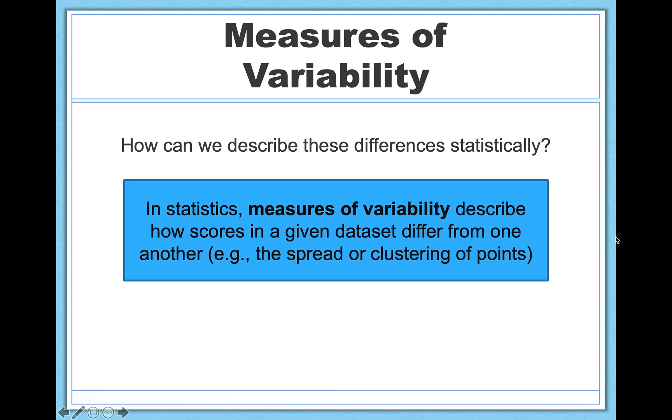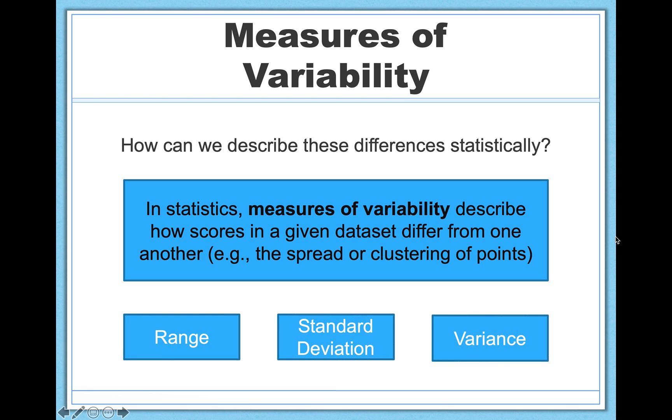So in general, in statistics, measures of variability are ways to describe these differences statistically. They describe how scores in a given data set differ from one another, and they capture things like how spread out or how clustered together the points are, things we've been looking at already. So there are three that we're going to talk about. We have the range, standard deviation, and variance. Let's start with the range.